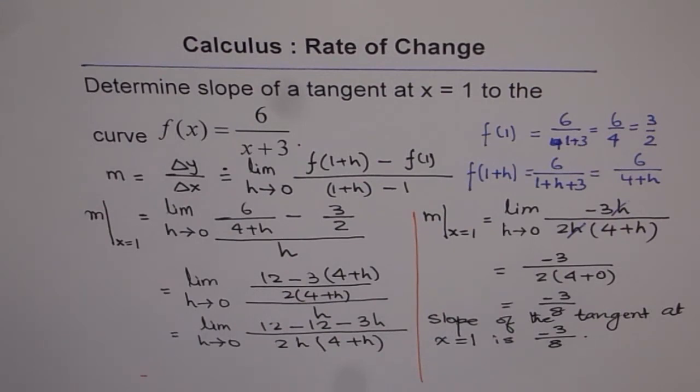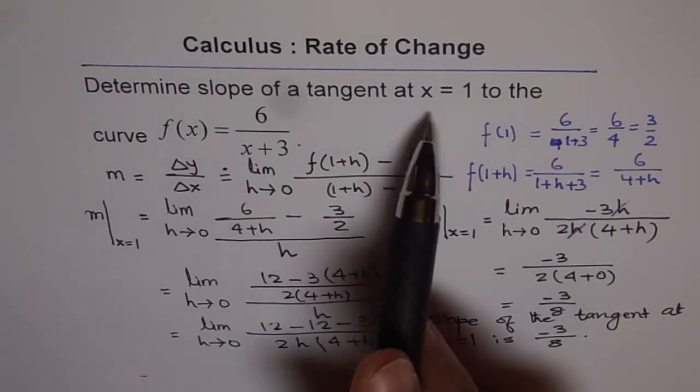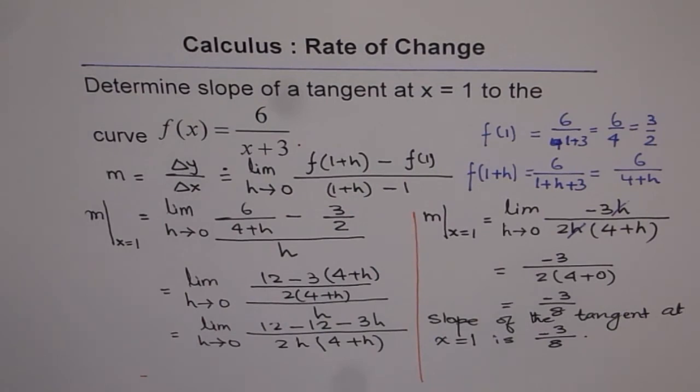Now, here is additional problem for you. What you can do is, you see we get negative. Now, the question here is, this was at x = 1. Try to do this question for different values of x. Let us say x = 5, x = -2, -7, like that.